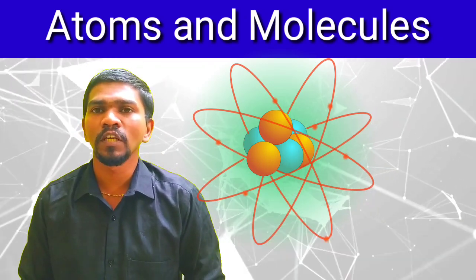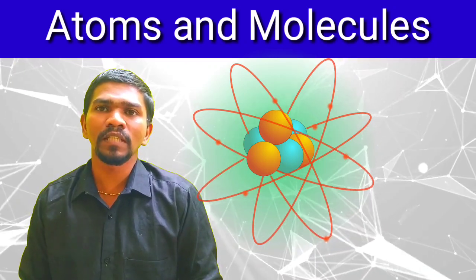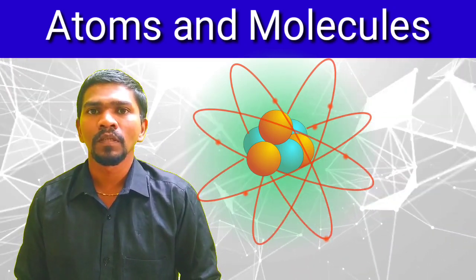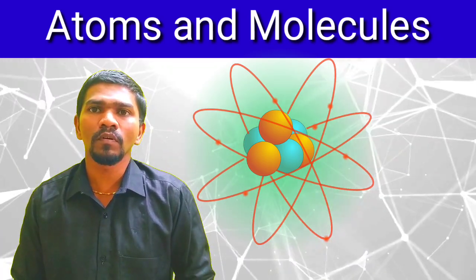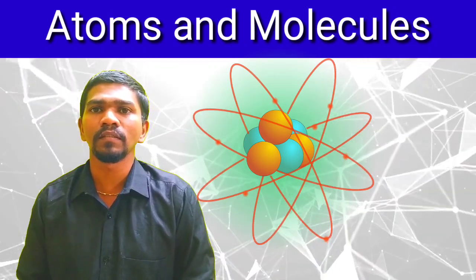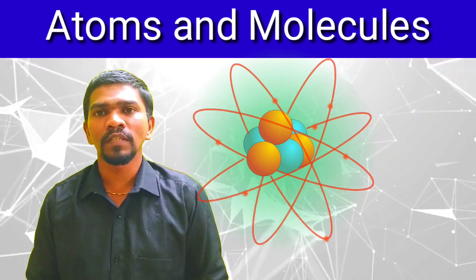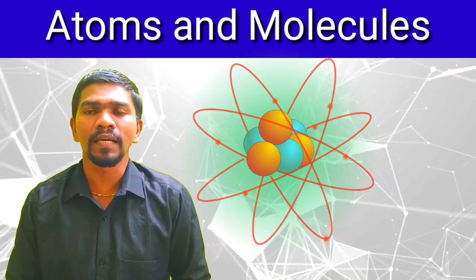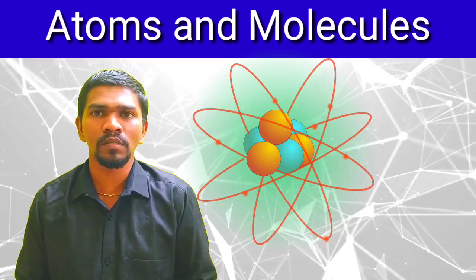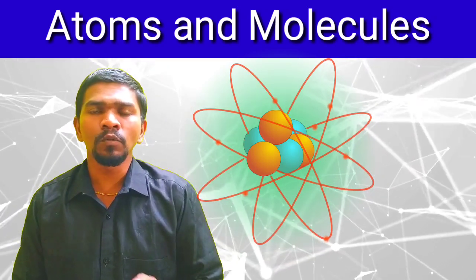The Greek term is 'atomos,' which means indivisible. So an atom is the thing which cannot be divided further. Up to 5 BC, the Greek philosophers believed that the atom cannot be divided. However, after recent modern studies, the atom can be divided, and it has subatomic particles like protons, neutrons, and electrons.